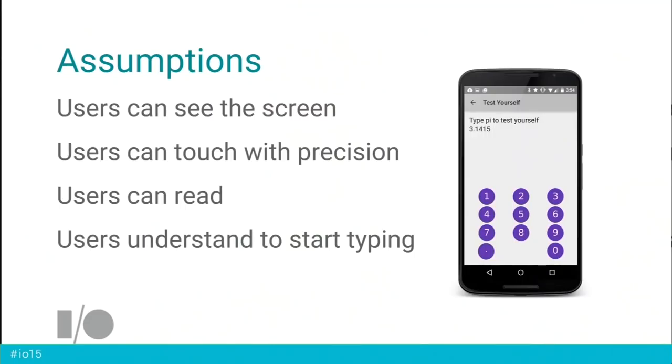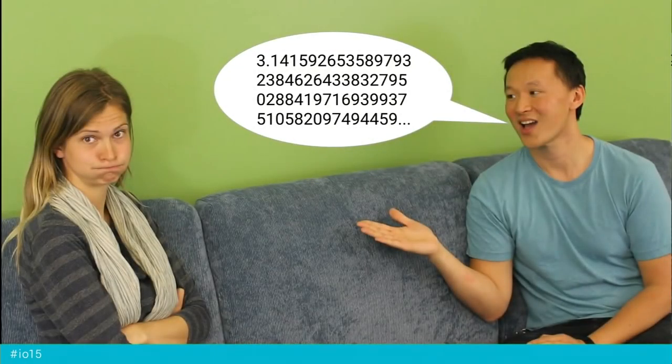What we've seen is the default experience, and it's really making a lot of assumptions. We're assuming users can see the screen, that users can touch the screen with a reasonable amount of precision, that they can read, that they can understand what the directions are saying. And perhaps most tenuous of all, we're assuming that people actually want to hear others memorize digits of pi. Not all of these assumptions are true for all users. Accessibility can address some of the assumptions that become real barriers for people to access the technology.